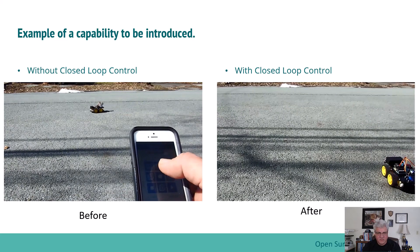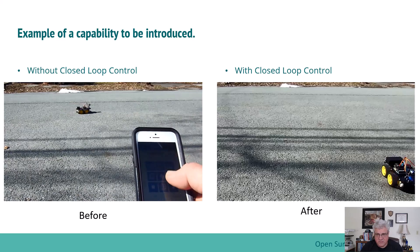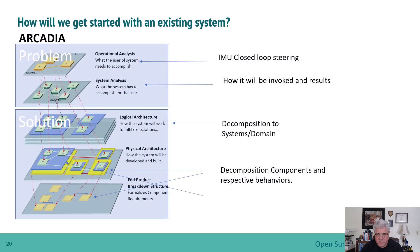That leads to some of the add-ons we're going to use to support that. In summary, the capability we're adding is IMU closed-loop steering — how it will be invoked and what its results will be at the system level. We're going to show how it gets decomposed down to the systems and domains, and eventually how that gets decomposed down to the components and their respective behaviors.